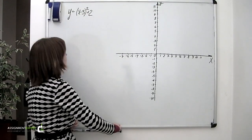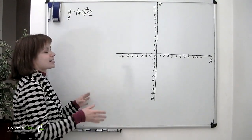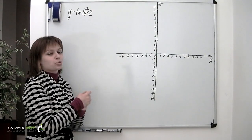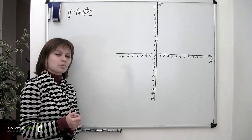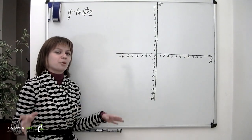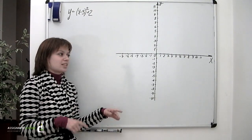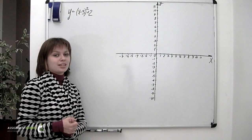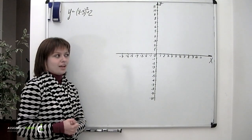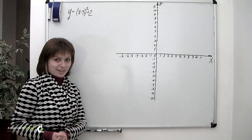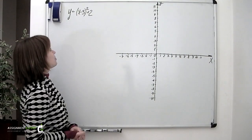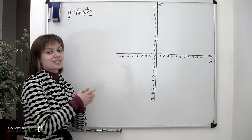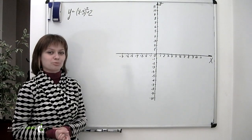We could take many x values, calculate their corresponding y's, obtain many points, and connect them to get a curve. This would work, but it's much easier to deal with equations like this if you know some of their key properties.